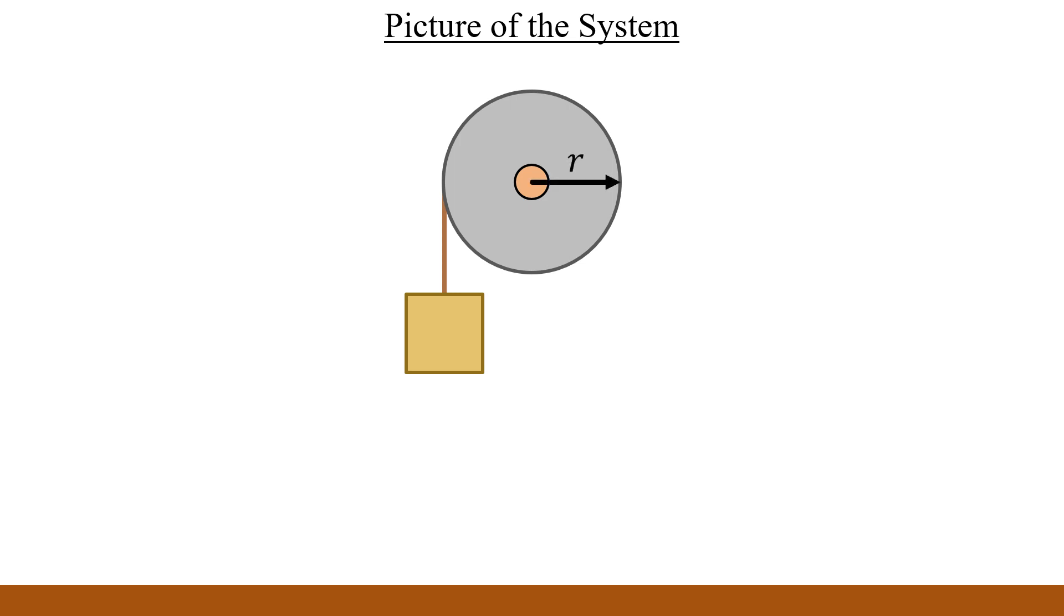The mass hangs from a string which is wrapped around a cylinder of radius r. Let's call the hanging mass capital M and the cylinder's mass lowercase m. Now we want to figure out the height that capital M needs to descend, which I'll refer to as h, such that once we release this system from rest, the cylinder will turn in the direction of omega and the block will fall to the ground, which grants the cylinder 480 joules of rotational kinetic energy.